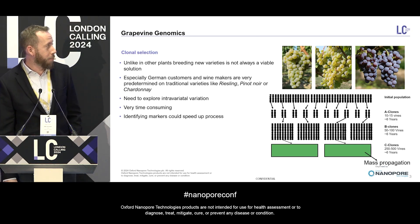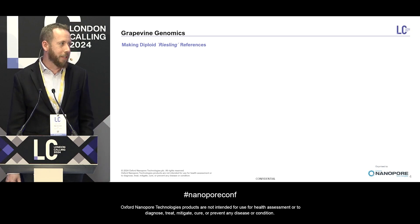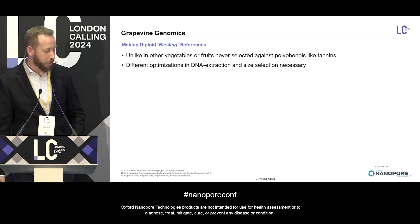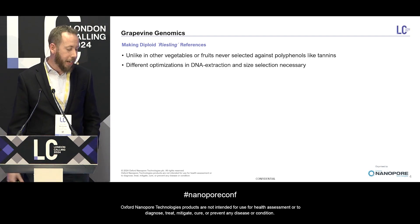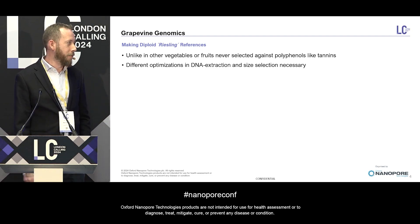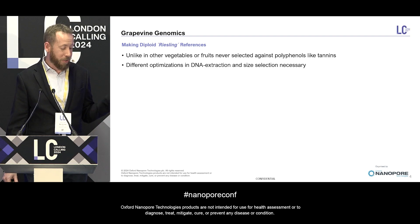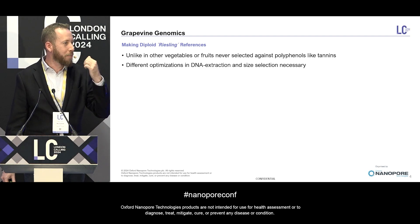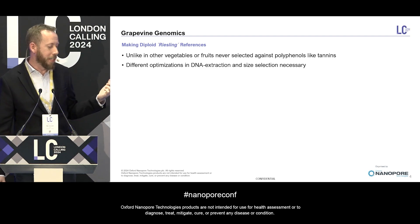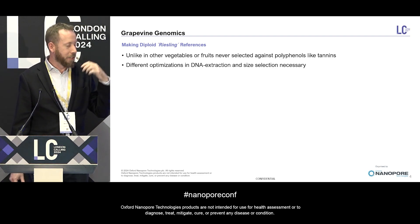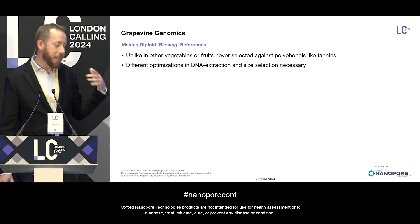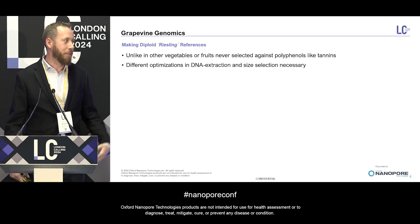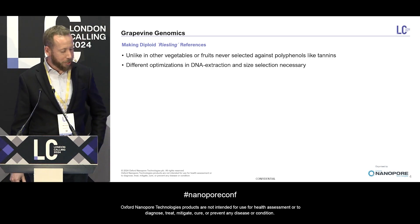For that, we decided to make a diploid Riesling reference to properly align our reads and see if there are deletions or inversions we wouldn't see with short-read sequencing alone. The problem is that, like most other fruits, grapevine has a lot of polyphenols — especially tannins. If you've had a glass of red wine and wondered about the red stuff on your lips, that's actually tannins precipitating and denaturing the proteins in your saliva. Unfortunately, they do the same thing with DNA when you extract it from grapevine leaves — they covalently bind to the DNA, so you basically have to start from scratch.